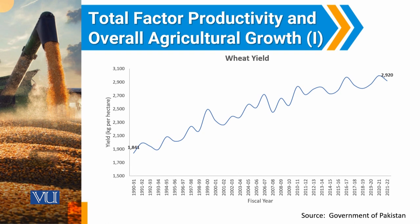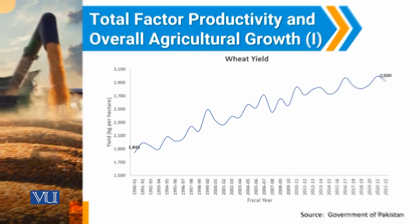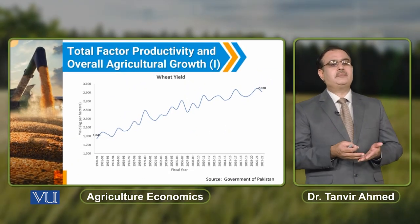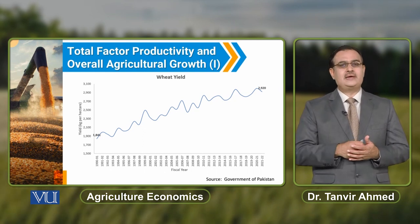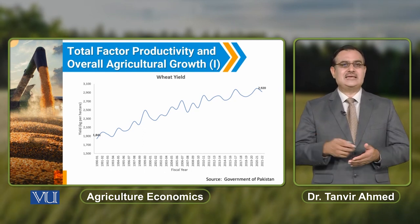But the increase in wheat yield during this time period is less than double. In year 1990–91, wheat yield is approximately 1,841 kg per hectare. But the increase is less than double.